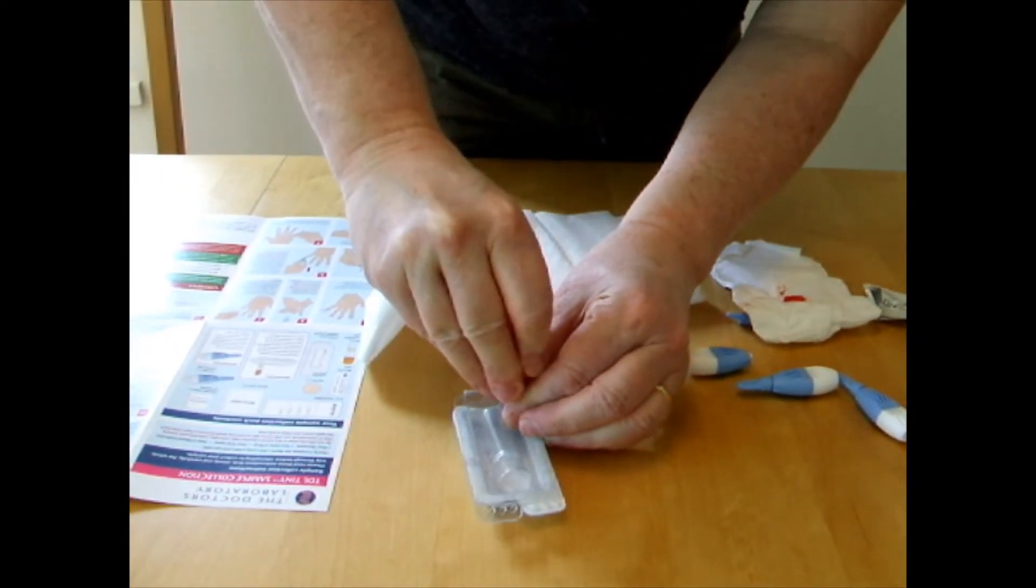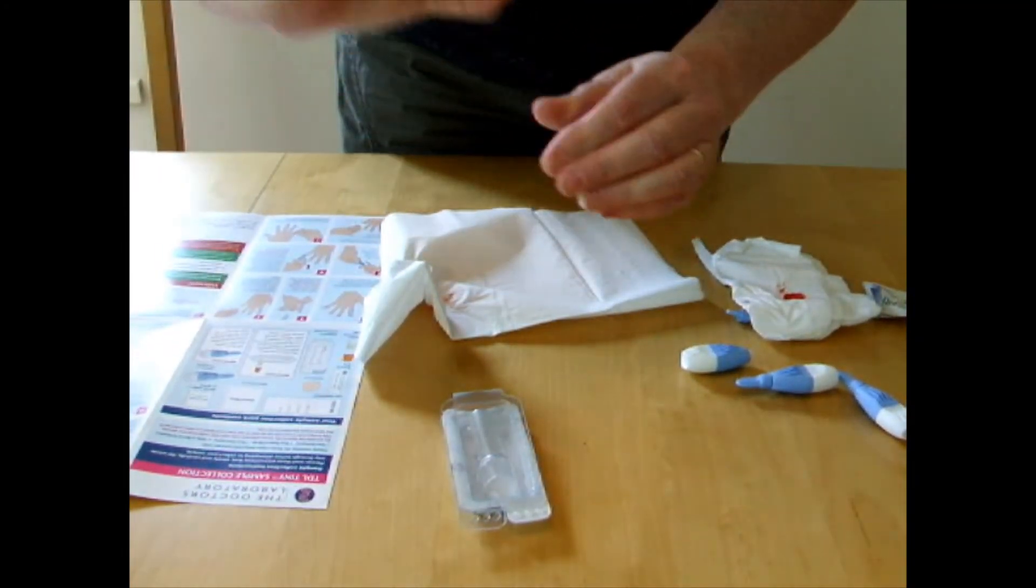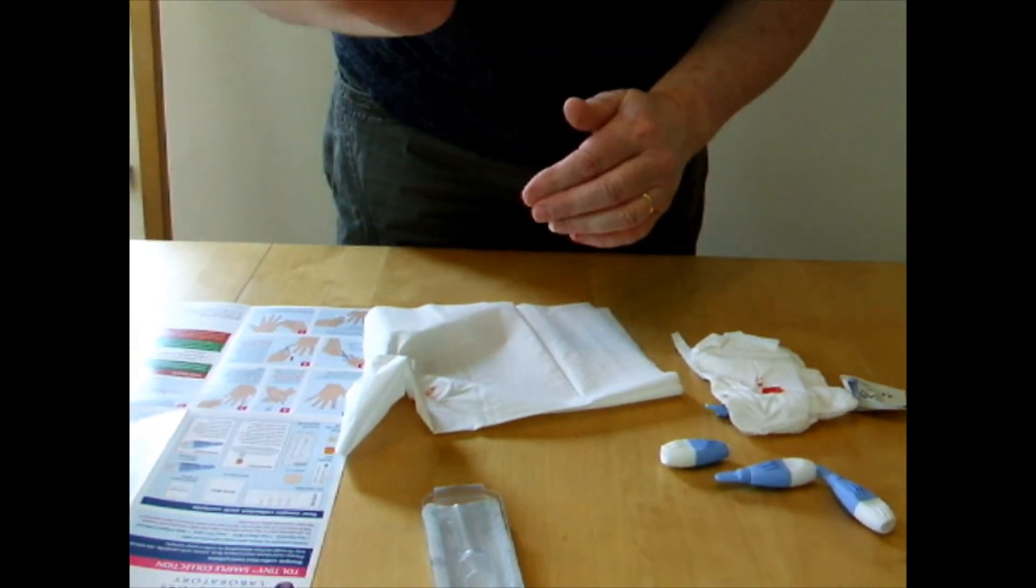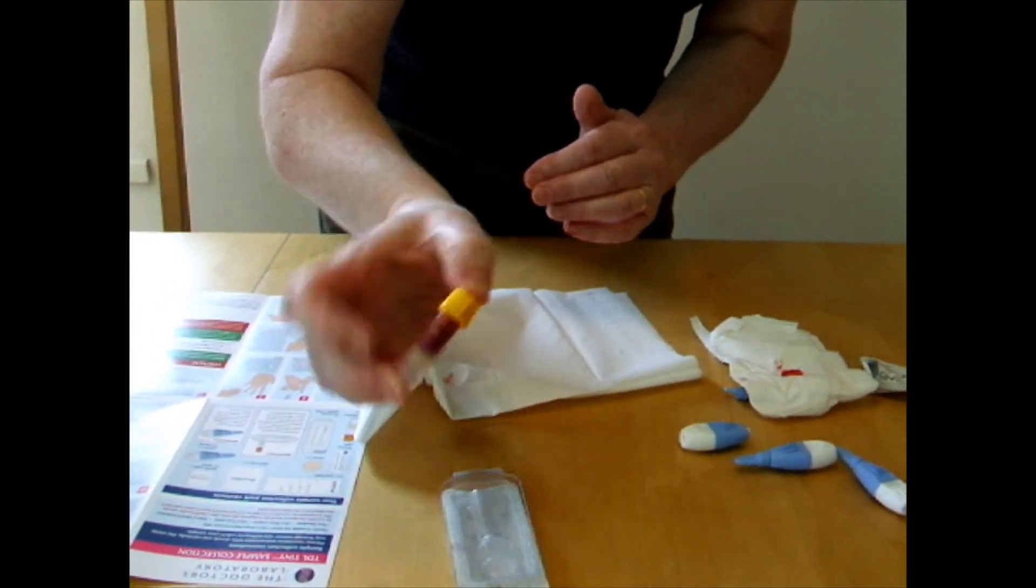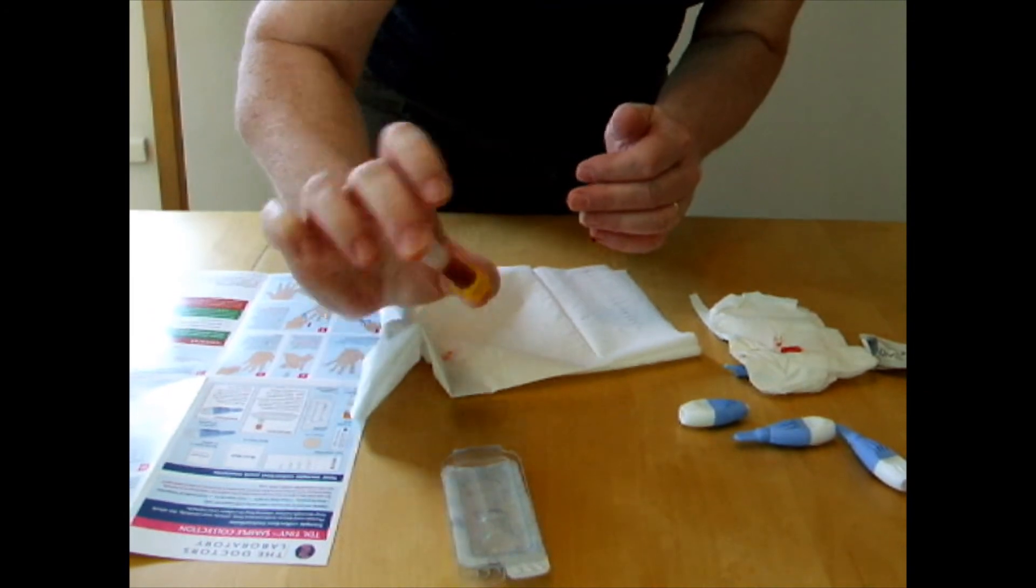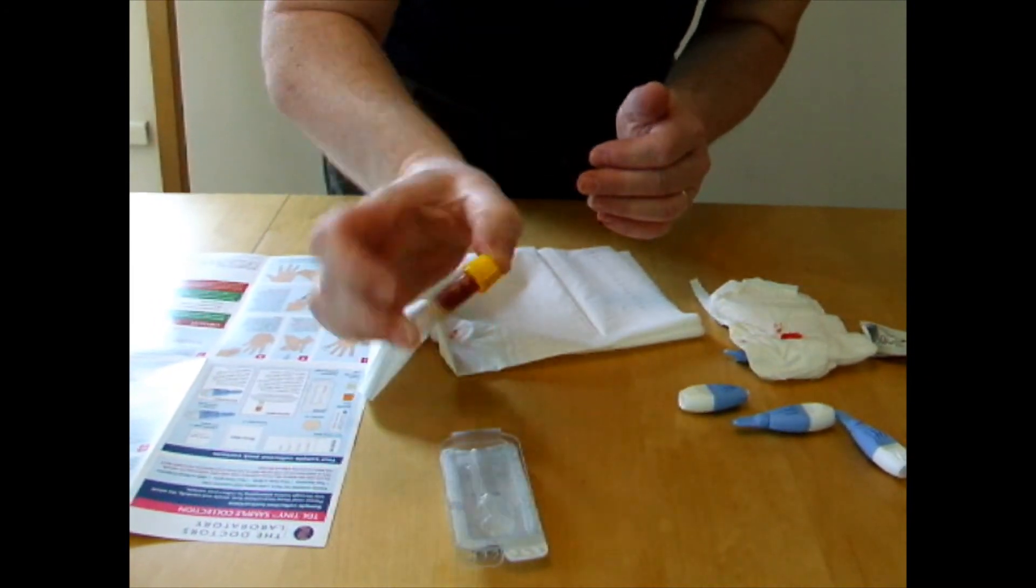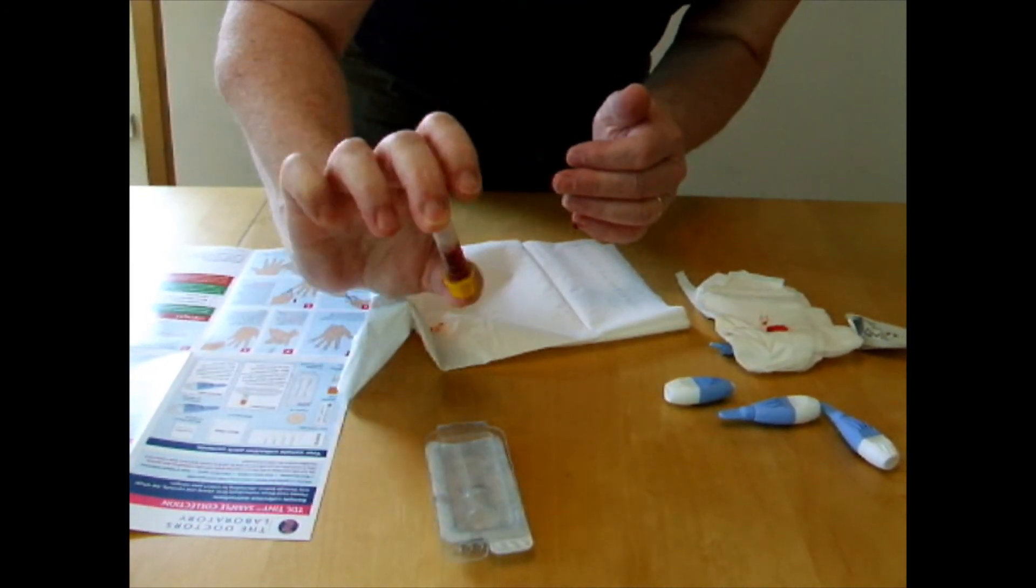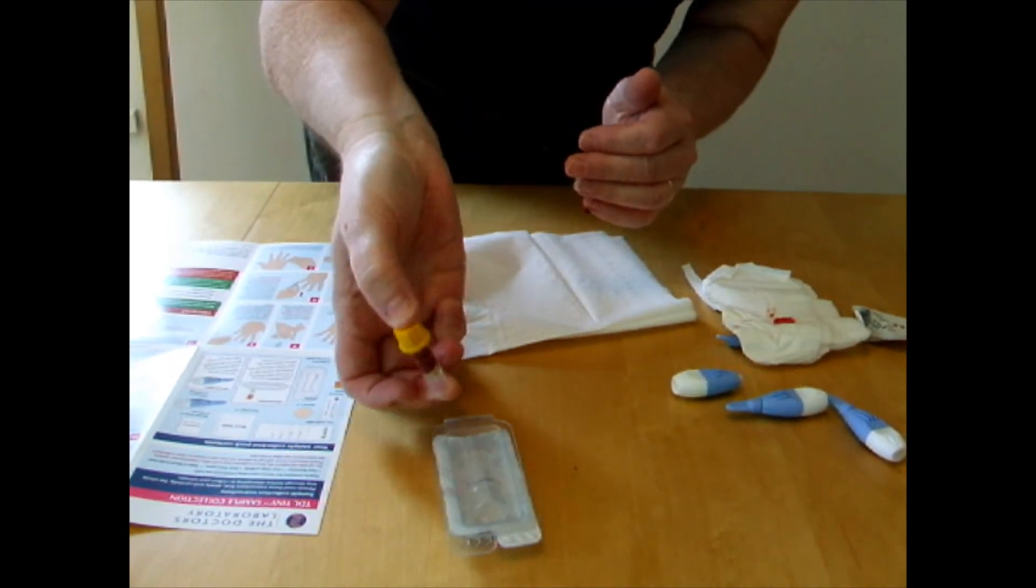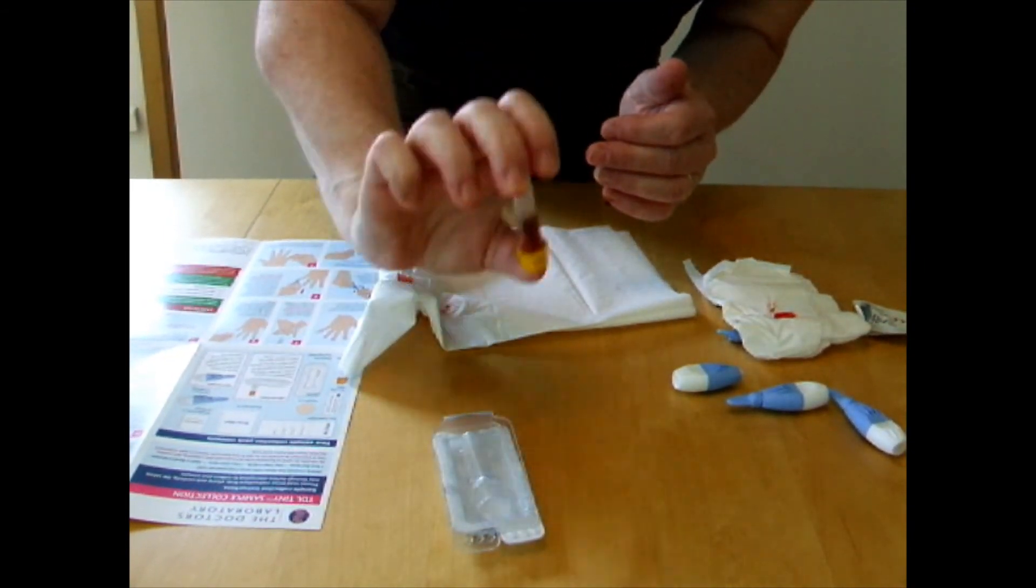And you need to put the lid onto the tube and hear it click and then invert it, turn it upside down so that it mixes. There's a chemical in the bottom so that the sample won't clot and go all solid and then they can use it in the laboratory to test.